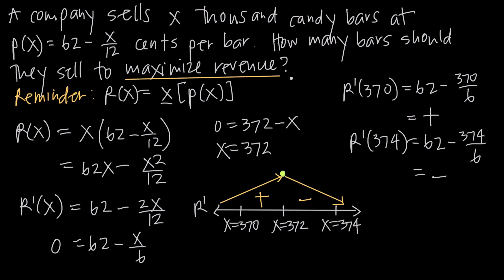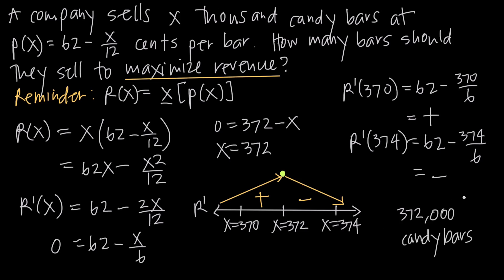With an applied optimization problem we always want to go back to the original question, because the answer is not always just the value of x. The question asks how many candy bars should they sell to maximize revenue. Since x represents thousands of candy bars and x equals 372, the company needs to sell 372,000 candy bars in order to maximize their revenue.